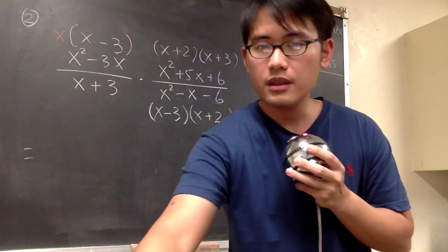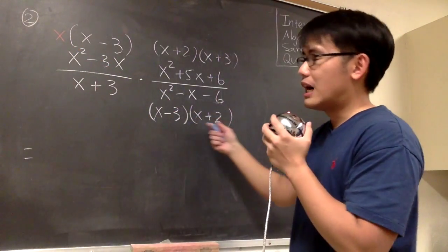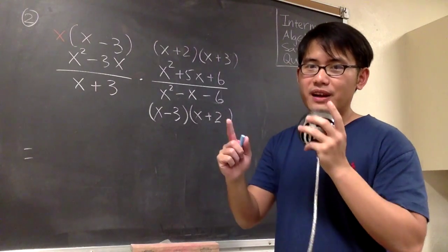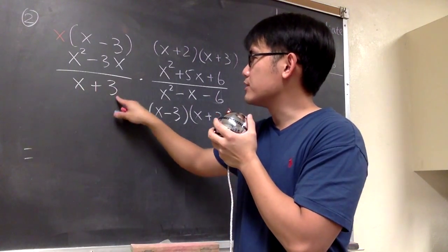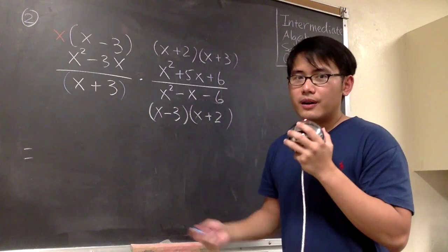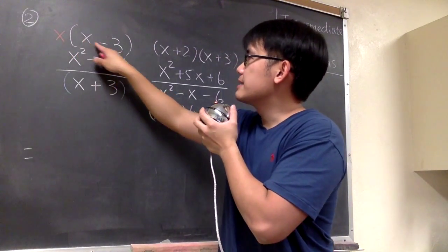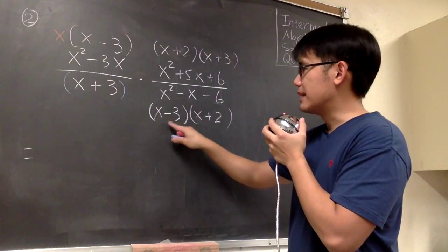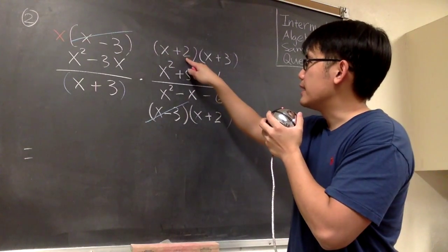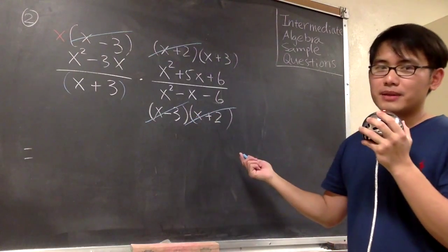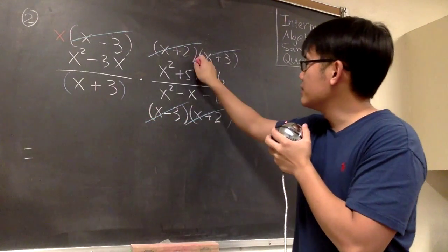After factoring everything, it comes to the best part — canceling things out. Looking at the factor x, I check the bottom for any x to cancel, but we can only cancel factors in parentheses, so this x cannot cancel with x inside (x + 3) — it survives. The factor (x - 3) in the numerator is exactly the same as (x - 3) on the bottom, so we cancel those. Then (x + 2) cancels with (x + 2), and (x + 3) cancels with (x + 3).